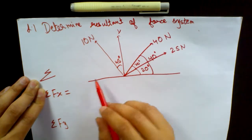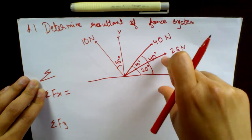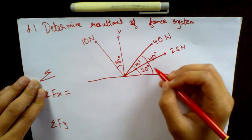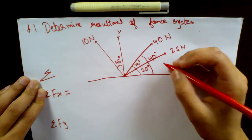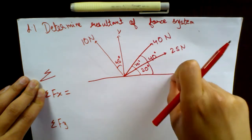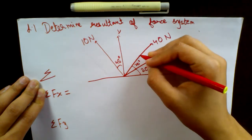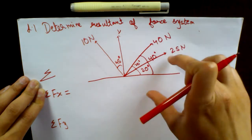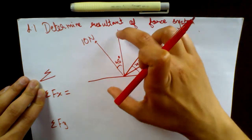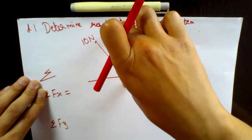So now you have this force system. You have 25 Newton, which is making an angle of 20 degrees with the positive x-axis. Secondly, you have a force of 40 Newton making an angle of 40 degrees with the positive x-axis. Thirdly, you have the force of 10 Newton, which is making an angle of 45 degrees with the positive y-axis.